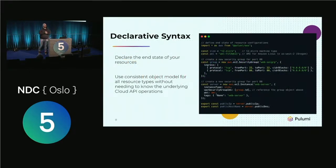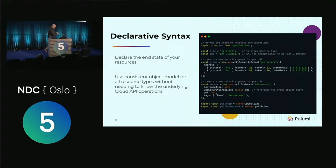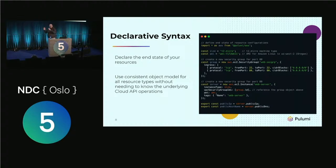Infrastructure as code basically allows you to have declarative syntax, and a tool will reconcile how the changes get to the environment you're targeting. What you see in front of you is TypeScript code that will deploy an AWS security group and an instance, and it will relate them in code to each other because VPC security group IDs is group.id. This is actual working code you can take and use — it's in Pulumi AWS. But it's declarative: even though we're using imperative languages, it's a declarative model, because you don't have to check that things have happened — the tool takes care of that for you. Terraform, CloudFormation, ARM templates all do the same thing.